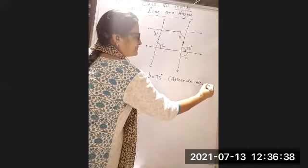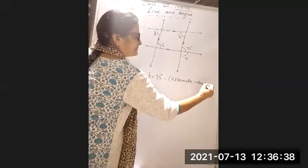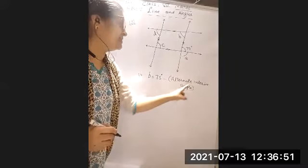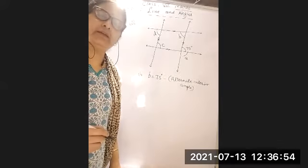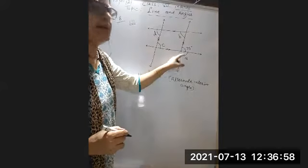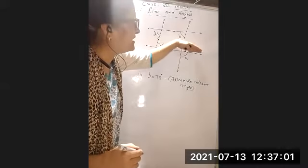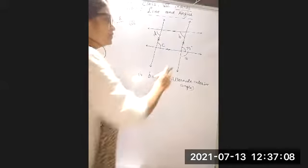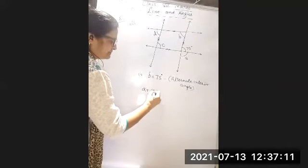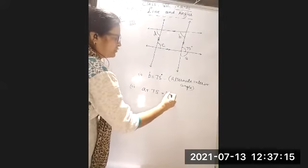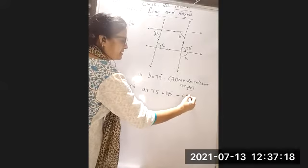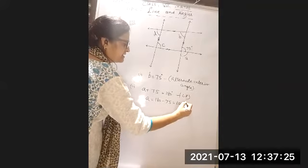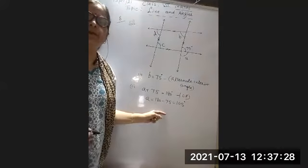Now you have to find four angles: A, B, C, and D. B is found. What is the property? These are the alternate interior angles. For angle A — this is a line and a ray intersecting it, forming two adjacent angles that form a linear pair. So A + 75 = 180. Therefore A = 180 − 75 = 105 degrees.